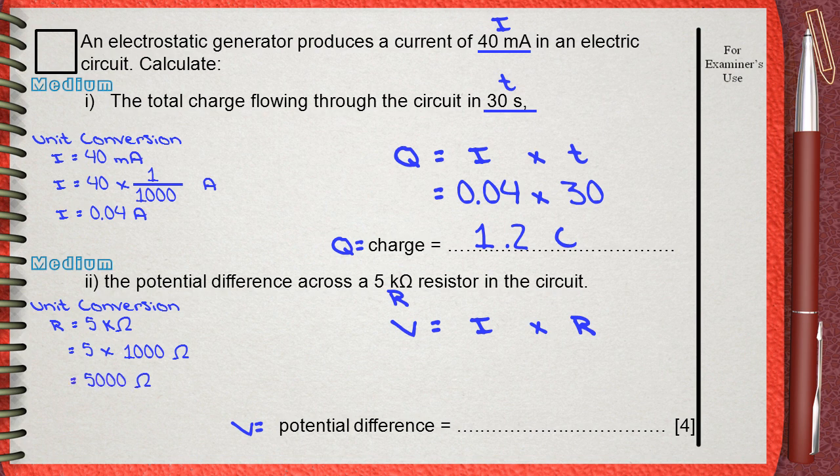By direct substitution in our equation, you can find that 0.04 times 5000. This equals 200 volts.